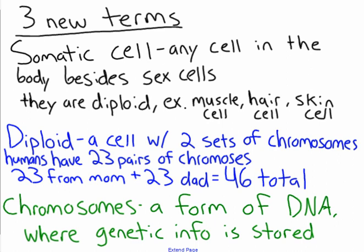Somatic cells are also diploid. Diploid is a cell with two sets of chromosomes. So besides your sex cells, all of your cells in your body have two sets of chromosomes — that's 23 pairs. Think of it like shoes: you have 23 pairs of shoes, but overall you have 46 shoes if you count each individual sneaker. So 23 from your mom, 23 from your dad, they come together to make pairs giving you a total of 46. Finally, chromosomes are a form of DNA and this is where genetic information is stored. DNA can be stored in either chromosomes or chromatin.